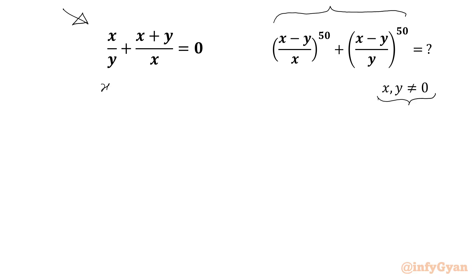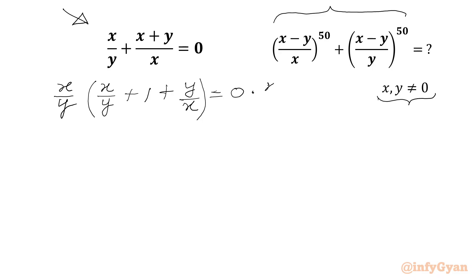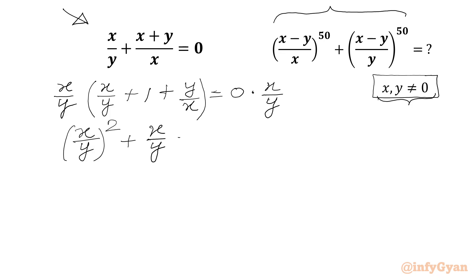We can rewrite our equation as x/y plus x/x, which is 1, plus y/x equals 0. Now I will multiply both sides by x/y — since xy is non-zero — which gives us (x/y) whole square plus x/y plus 1 equals 0. This is a quadratic equation in x/y.